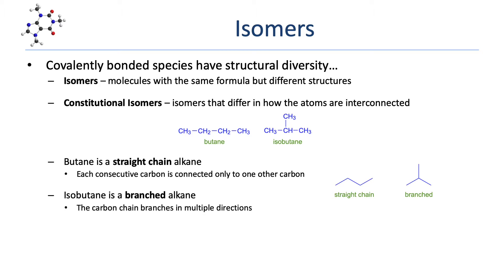Butane is an example of a straight-chain alkane — progressing from one end, it goes to one carbon at a time. Isobutane is a branched alkane — at some point you reach a carbon that can go on to two different carbons. The more atoms you have, the greater diversity of isomerism. A 10-carbon alkane with formula C10H22 has 75 different isomers.